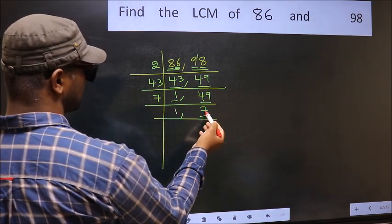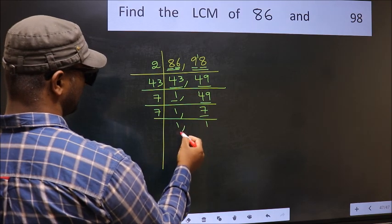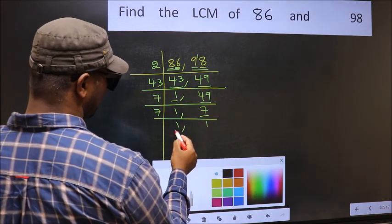Now we have 7, 7 is a prime number. So 7, 1, 7. So we got 1 in both the places.